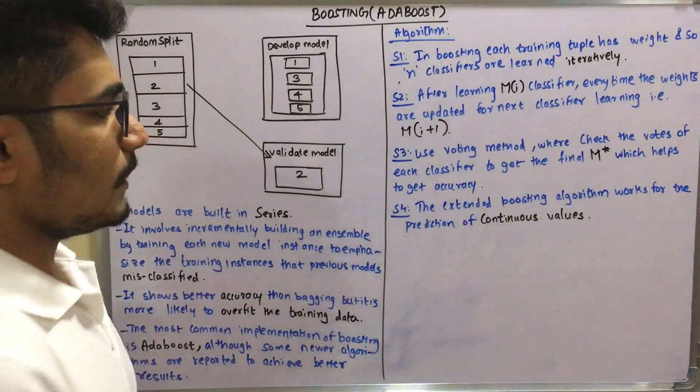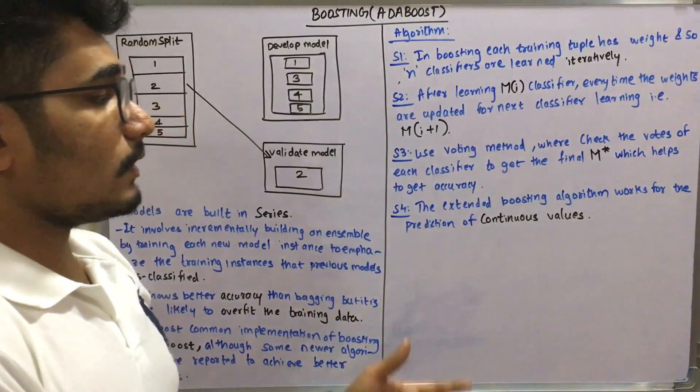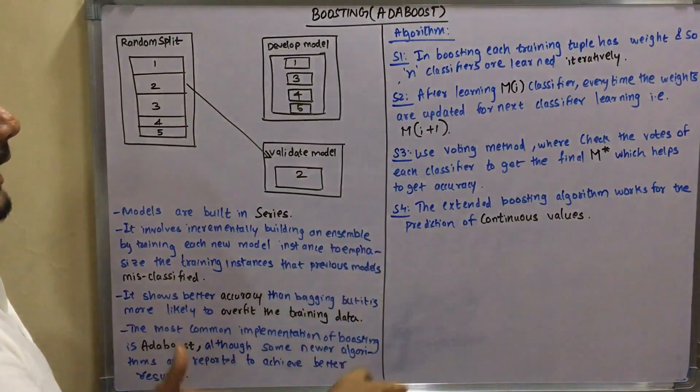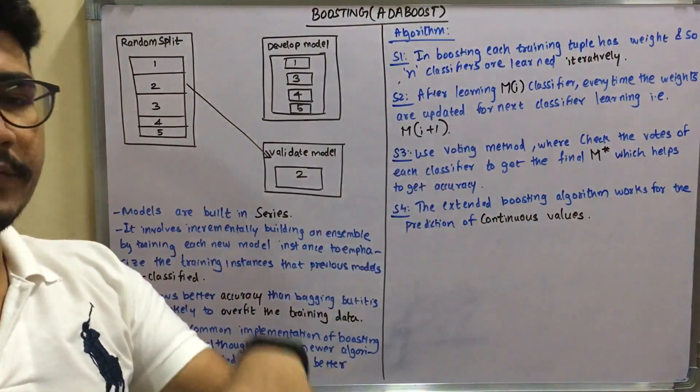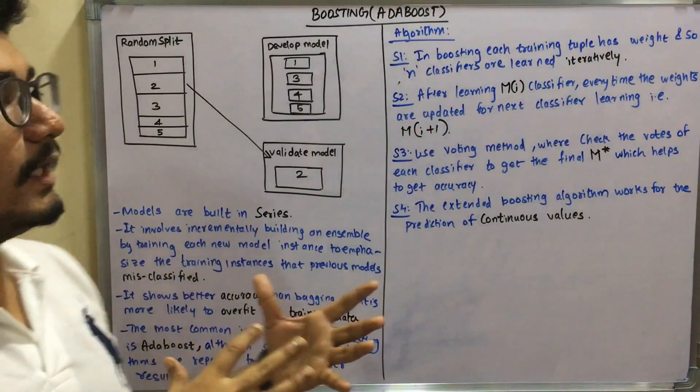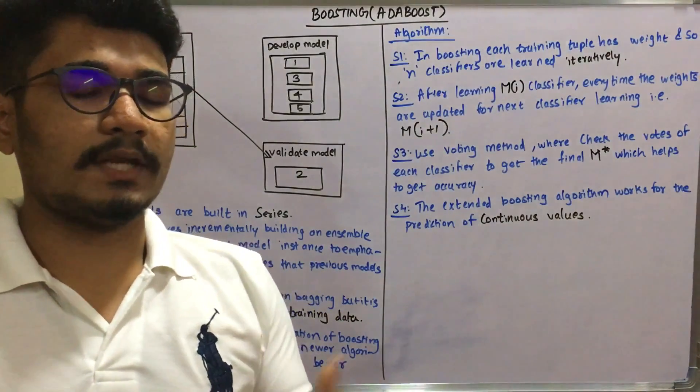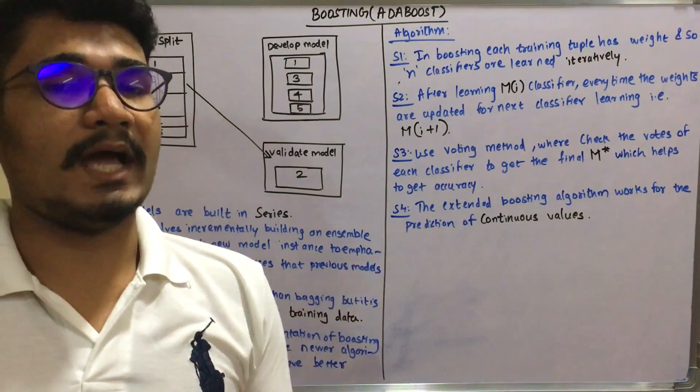Next, the extended boosting algorithm works for the prediction of continuous classes. There is one more technique or extension or component which you can add in this boosting technique which will work for continuous values. In bagging we add the continuous values then take the average.